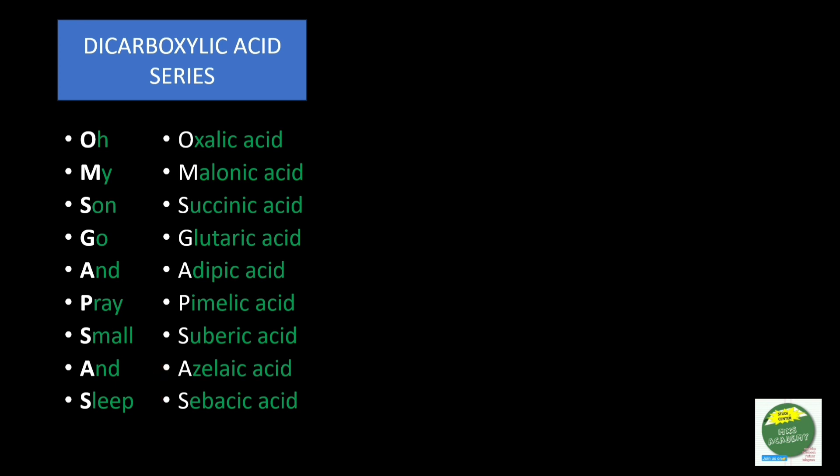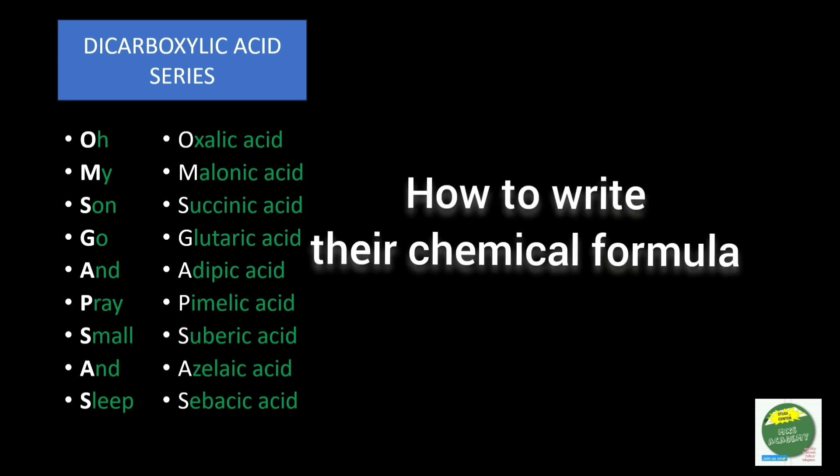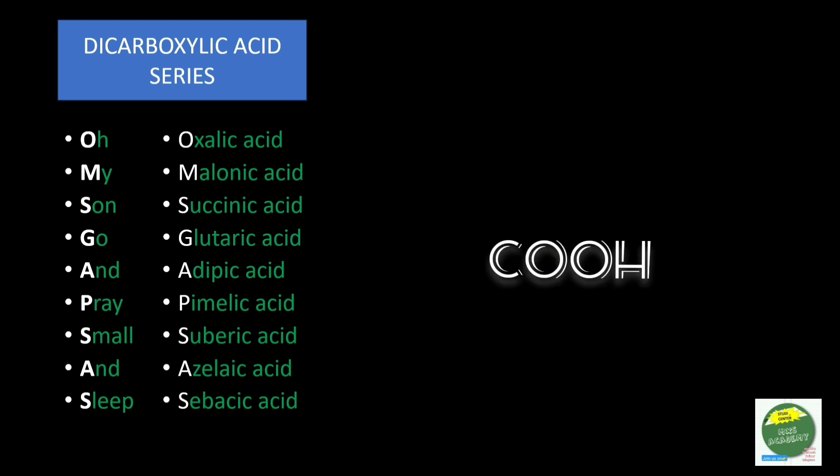So simple. Now the chemical formula. Carboxylic acids have a COOH functional group, so dicarboxylic acid implies two COOH groups. We would use this general formula to represent a dicarboxylic acid.